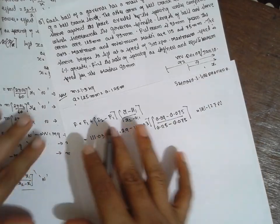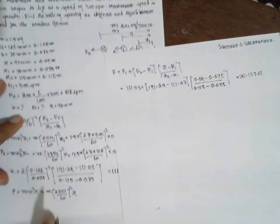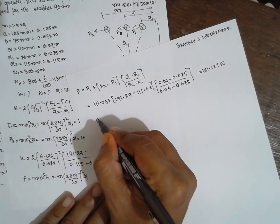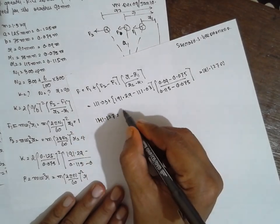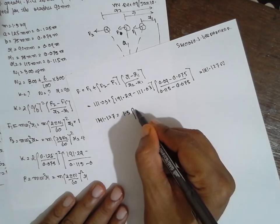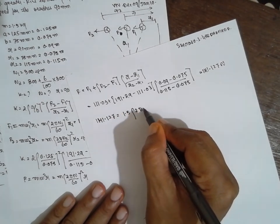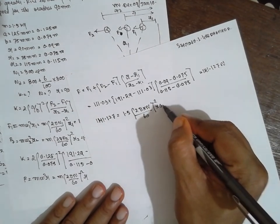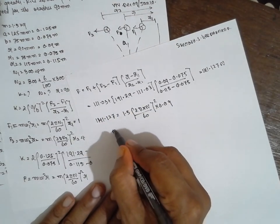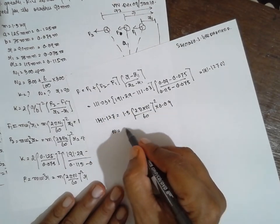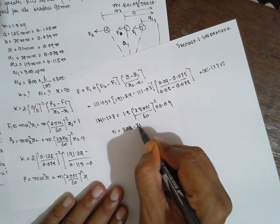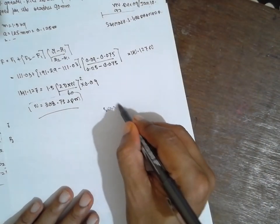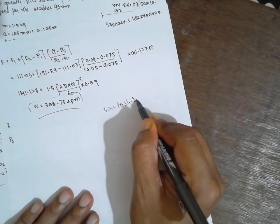Once we get the F value, we substitute into the formula F equals M·(2πN/60)²·R. With F equals 141.127 N, M equals 1.5 kg, and R equals 0.09 m, solving gives the equilibrium speed N equals 308.75 RPM. I am Santosh Gaydankar. Thank you very much.